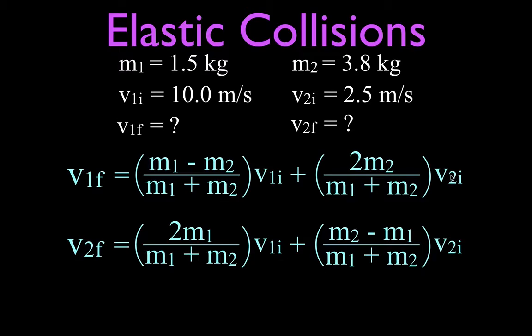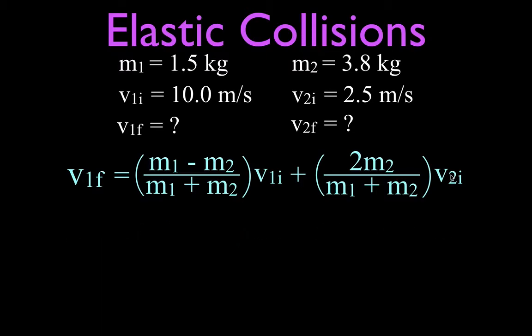So mostly it now kind of becomes an algebra problem and you want to keep your order of operations and your negative and your positive signs straight. So of course we'll start with mass number one and we're going to plug the values in for mass number one and that simply is m1 is 1.5 and m2 is 3.8.